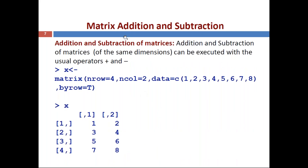The next operation is matrix addition and subtraction. One important point to remember: addition and subtraction of matrices requires the matrices to be of the same dimension. Matrices of the same dimensions can be computed using the usual operators + and -. Recall matrix x, which was created with 4 rows and 2 columns with data elements 1 to 8 and byrow=TRUE.